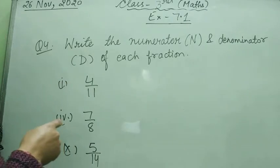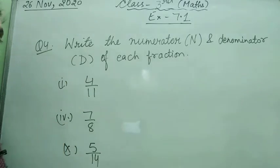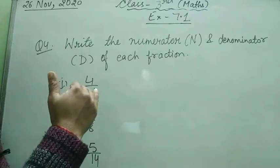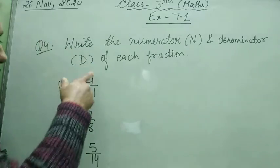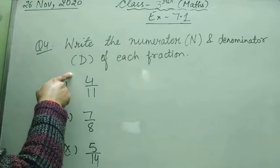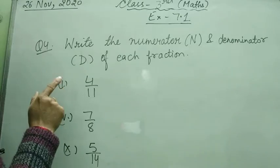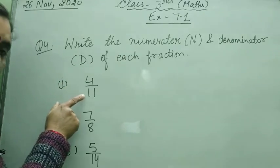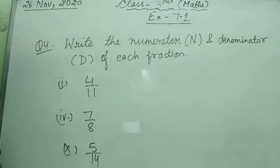There are 10 parts in this question. In all parts, you need to identify the numerator and denominator. What is numerator? The number on the upper side of the fraction. And what is denominator? The number on the down side, okay?